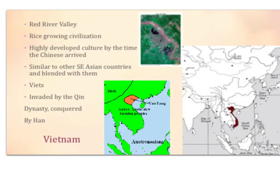We're moving into our last area of Chinese influence, which is Vietnam. Vietnam was located along the Red River Valley in the BCE time period. It looks red in this Google Earth image. The river is a rice-growing civilization, and it was highly developed by the time the Chinese arrived. Although China is going to have a lot of influence, it's not going to have as much as with Korea. Vietnam is similar to other Southeast Asian countries and blended with them — you'll find more similarities between Vietnam and Cambodia, Laos, or Thailand. The people are known as the Viet, and they were invaded by the Qin dynasty of China and conquered by the Han.